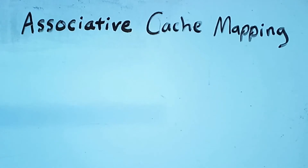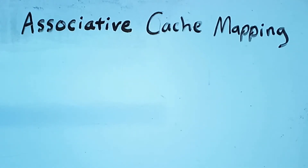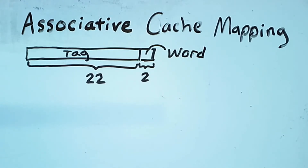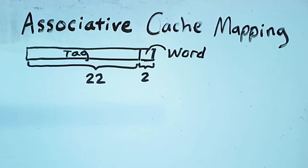An associative cache mapping uses Content Addressable Memory in the following way. As in the previous video, our memory addresses will still be 24 bits long. Similarly, within any given cache line, the last two bits will refer to a particular memory word or byte within that line. But what is now different is that we use all of the remaining bits to specify the tag. So we have a 22-bit tag used for looking up a given memory address's contents in the cache. As a consequence, the amount of storage required for tags in the cache is much greater.